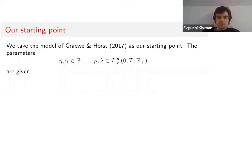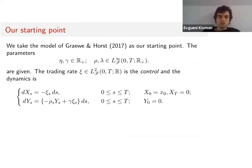As our starting point, we take the optimal liquidation model of Graewe and Horst. These parameters are fixed, and we introduce the trading rate ξ, which is the rate at which we're selling a single asset that we want to liquidate by the end of the time horizon.